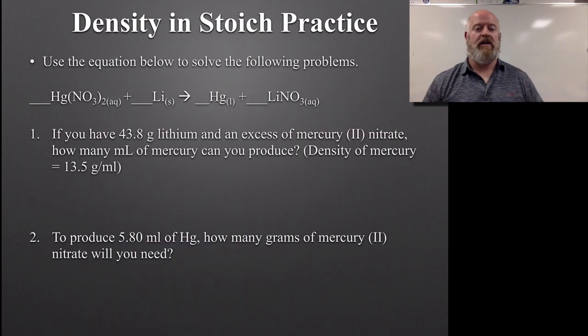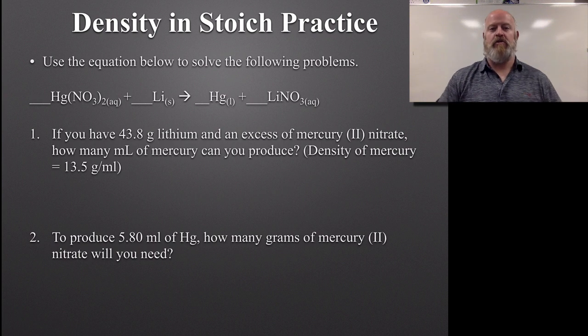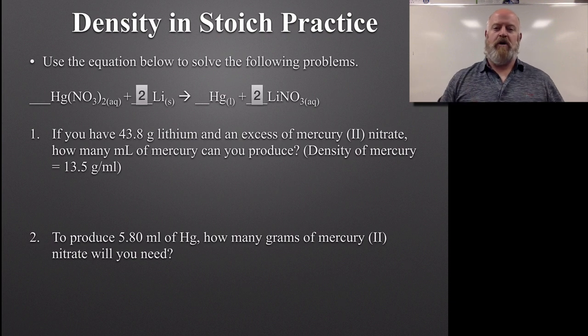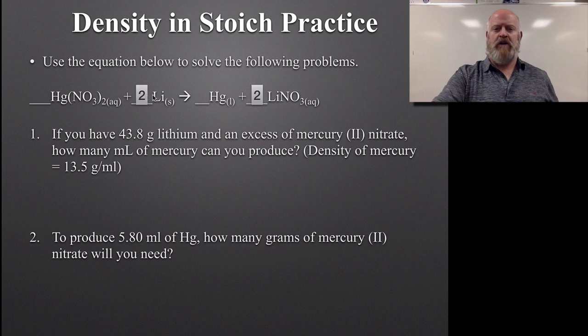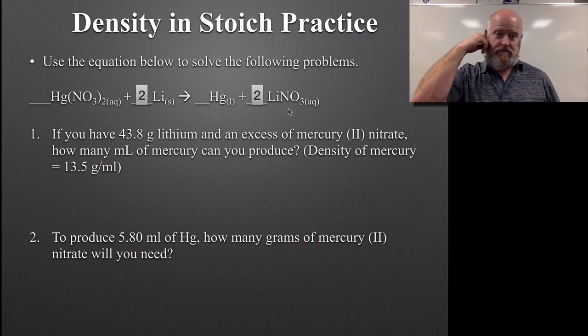If we switch over to our next slide, we have a couple of practice problems here. We're going to talk about using density in these scenarios. First we have a balanced chemical equation. So we want to balance this thing out. So we have one mercury nitrate, two lithiums, one mercury, and two lithium nitrates to make this thing balanced.